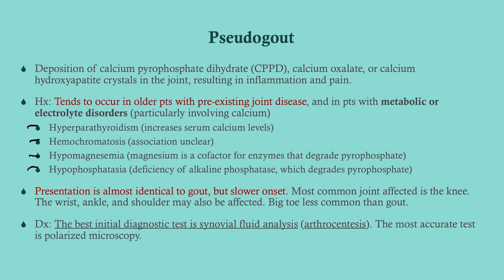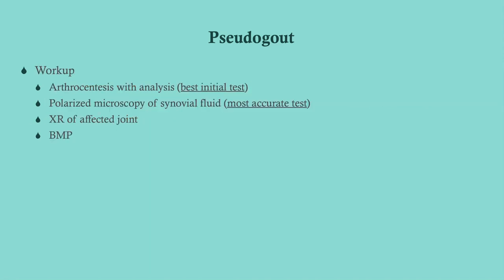The presentation of pseudo gout is almost identical to gout, but it tends not to wake patients up because onset is slower. The most commonly affected joint is the knee, though other joints can be affected; the big toe is less common than in gout. Best initial diagnostic test is synovial fluid analysis; the most accurate is polarized microscopy — same as gout.